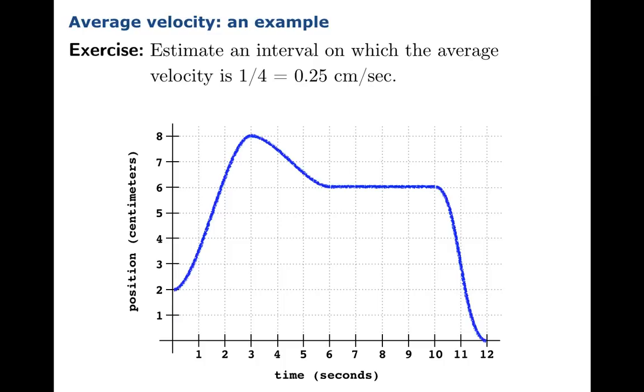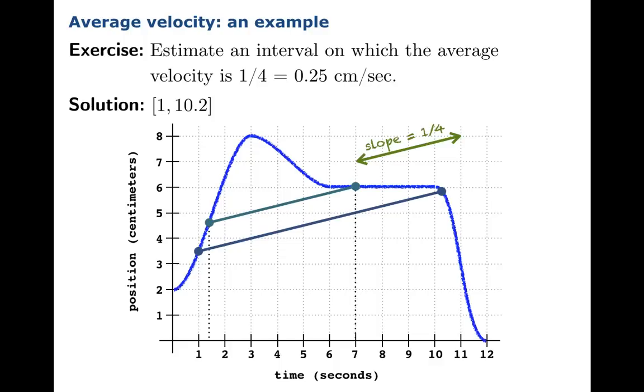Let's ask a different question. Let's find intervals where the average velocity is 0.25 centimeters per second. The key is to imagine what a slope of 1/4 looks like. You have to imagine intervals for which the endpoints, when you find the corresponding points on the graph, have a slope of 1/4. For example, from 1 to about 10.2 roughly. Of course there are other possibilities. If you had a ruler, you could try to move it along parallel and keep finding these spots. These are just 4 intervals that work, but obviously there are other possibilities.